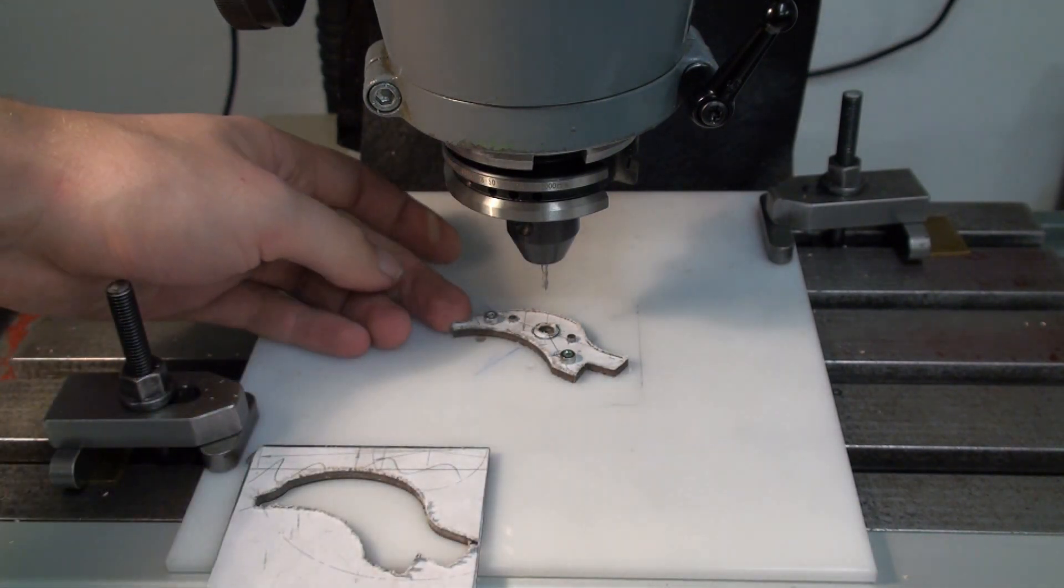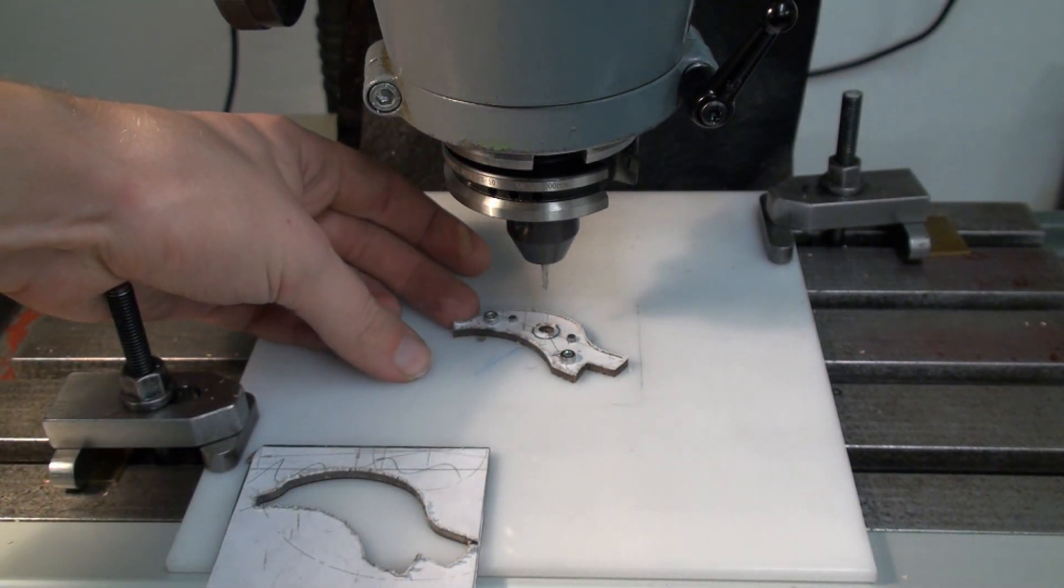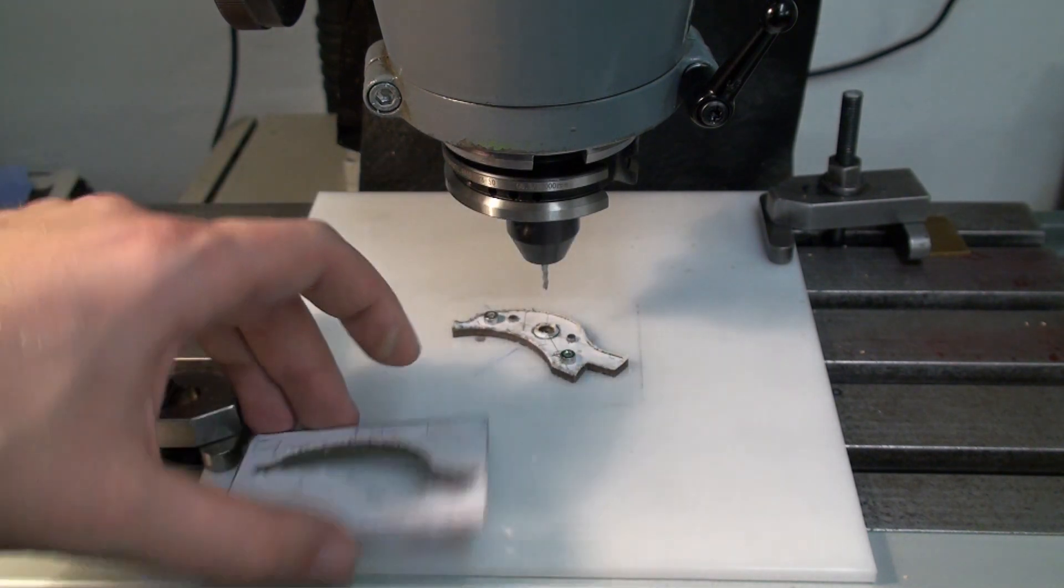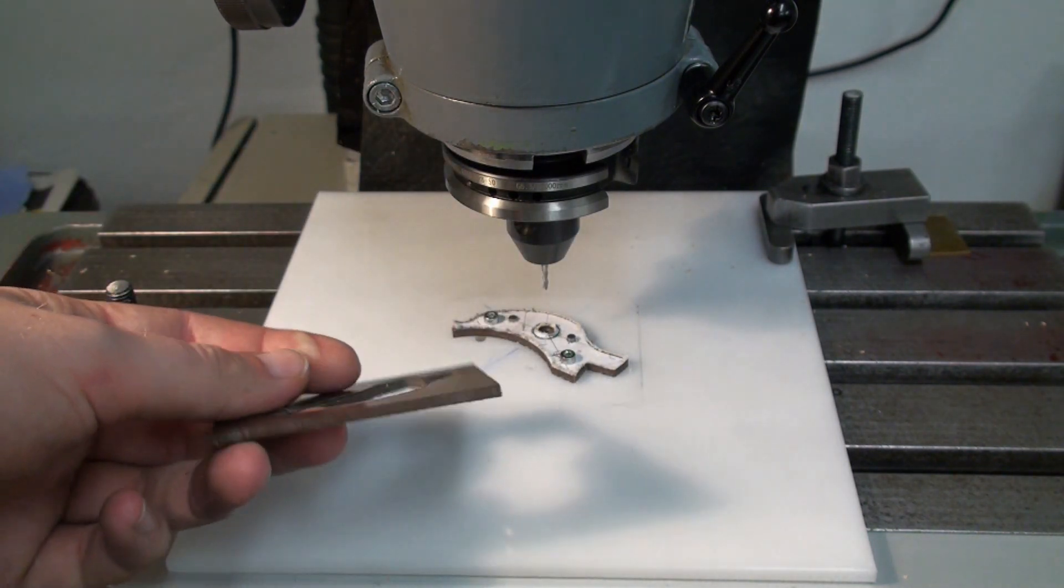Okay, this is the template in 10 to 1 ratio for the sear. It's machined from 3 mm phenolic.